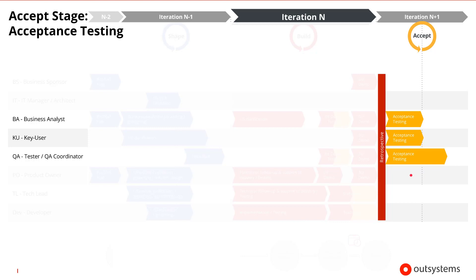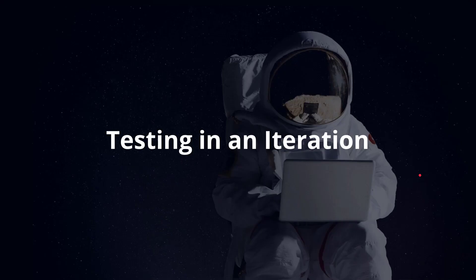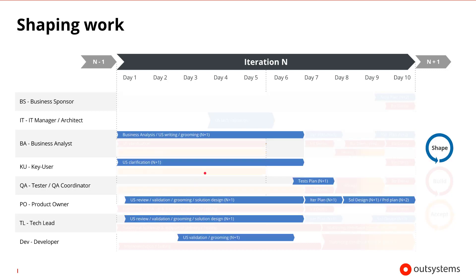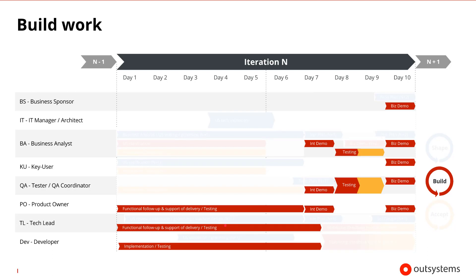As we discussed earlier, each iteration has all three types of work going on. If we focus on testing in an iteration, the iteration typically starts with acceptance work — the tester will coordinate user acceptance testing of the user stories from the previous iteration, together with the business analyst and the key users. That will be followed by shaping work, where the tester may participate in grooming user stories and then creates the test plan for the next iteration. Next, there's the build work — the development team delivers the results of implementation and testing to the tester, who can then participate in the internal demo and begin preparing user acceptance testing for the next iteration. The stage ends with the tester participating in the business demo along with the key users.